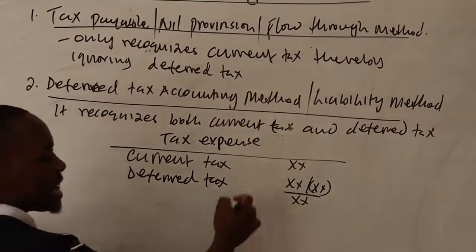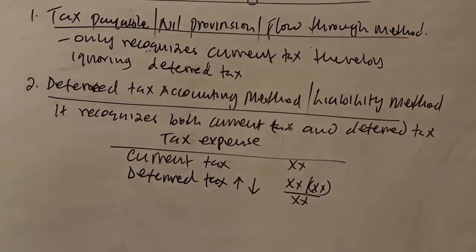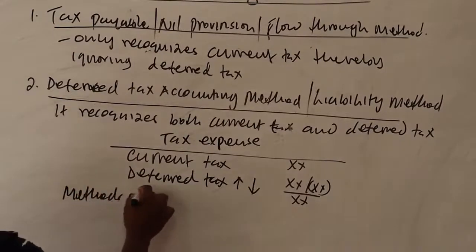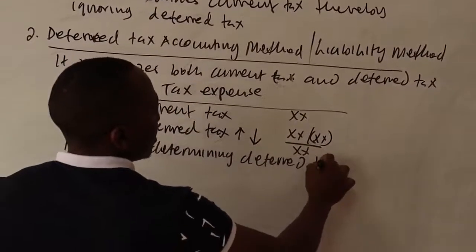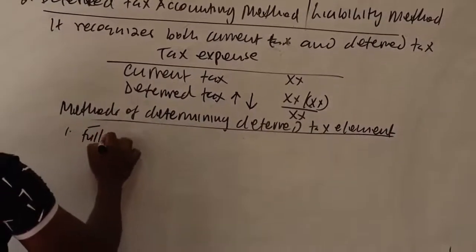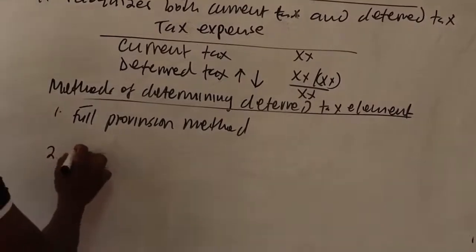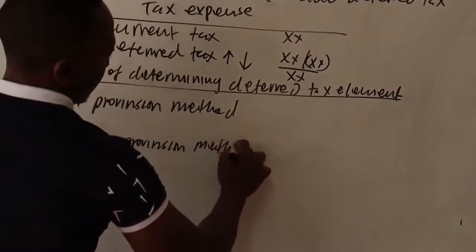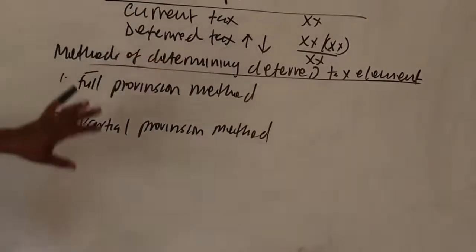Under the deferred tax accounting method, if there was an increase in deferred tax it becomes an expense; if a decrease, it becomes an income you deduct. Under this method, there are two sub-methods for computing the deferred tax element: the full provision method and the partial provision method.